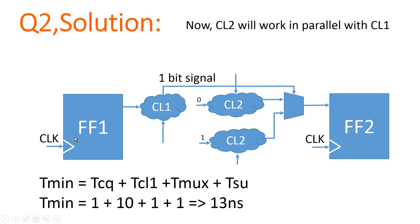Since both combination logics are working in parallel, let us recalculate T_minimum for this new path. T_min = TCQ + TCL1 + T_MUX + TSU of flip-flop 2. TCQ is 1 nanosecond, TCL1 is 10 nanoseconds, delay of MUX is 1 nanosecond, and setup time of flip-flop 2 is 1 nanosecond. Adding these up gives 13 nanoseconds. So the new circuit can work at 13 nanoseconds instead of 22 nanoseconds.